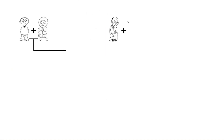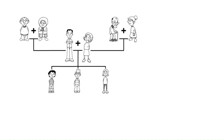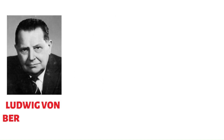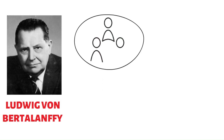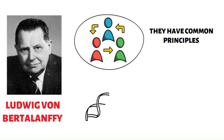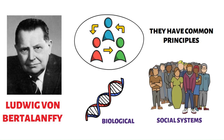Systems Theory views individuals as part of larger, interconnected systems, emphasizing the dynamic interactions between individuals and their environments. Ludwig von Bertalanffy proposed that systems have common principles of organization and behavior, which apply across various levels of complexity from biological organisms to social systems.